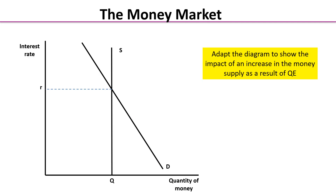We're going to start with the money market diagram. This is a demand and supply diagram showing the demand for money and the supply of money, with the price of money — the interest rate — on the y axis. The money market covers a really short period of time: days, possibly weeks, or even hours. So the supply of money is fixed in that short time period, giving us a perfectly inelastic supply curve. The demand curve follows normal rules: at very high interest rates less is demanded, but at low interest rates more money is demanded.